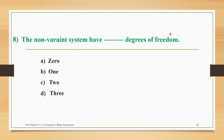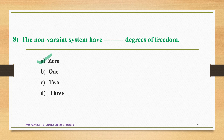Question number eight: the non-variant system has how many degrees of freedom — option A is 0, option B is 1, option C is 2, option D is 3. Based on the types of systems classified by degrees of freedom, a non-variant system has F equal to 0. Therefore the correct answer is option A — the non-variant system has zero degrees of freedom.